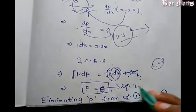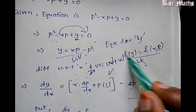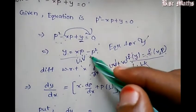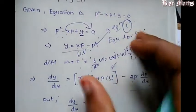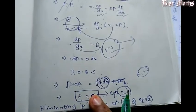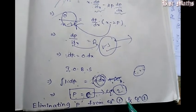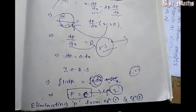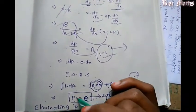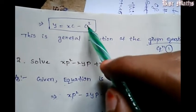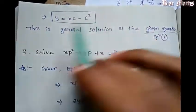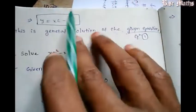Eliminating p from equation number 1 and equation number 2: F of y equals f of x, p — this is equation number 1. So p values are equal to c. We substitute p = c into equation number 1 to eliminate p. So the general solution is y equals xc minus c squared.